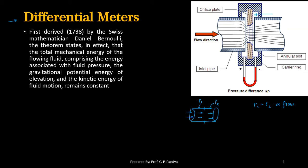Mathematically this relation depends on Bernoulli's theorem. Bernoulli's theorem states that the total mechanical energy in a flowing fluid — comprising the energy associated with pressure, gravitational potential energy due to elevation, and kinetic energy — remains constant at each and every point of the flow. In other words, the sum of pressure head, velocity head, and elevation head at one point equals their sum at another point in the direction of flow, plus the loss due to friction between the two points.